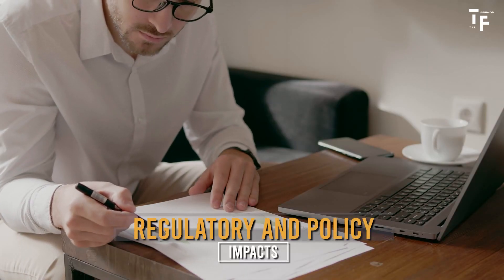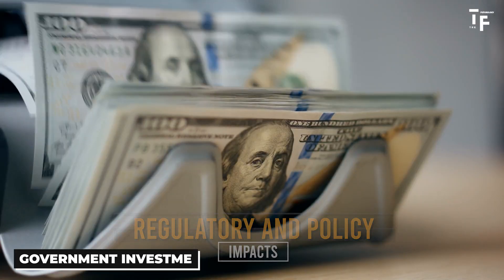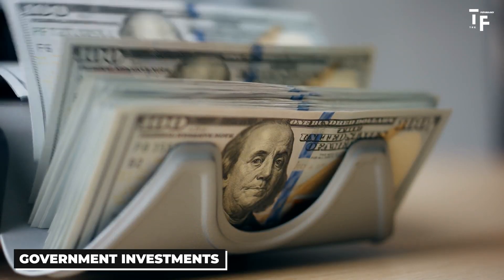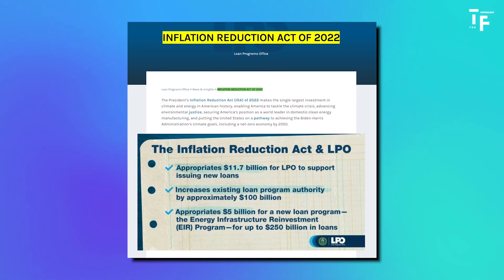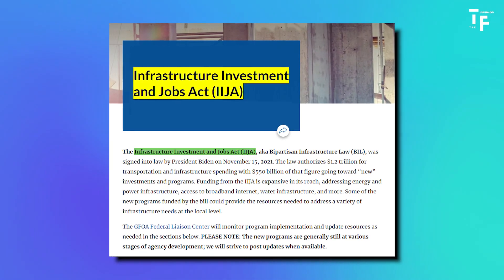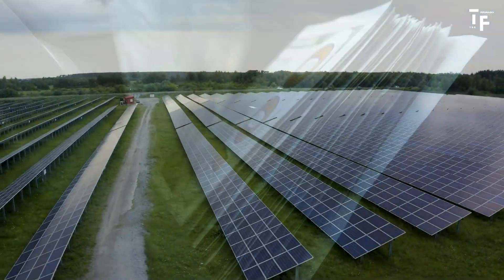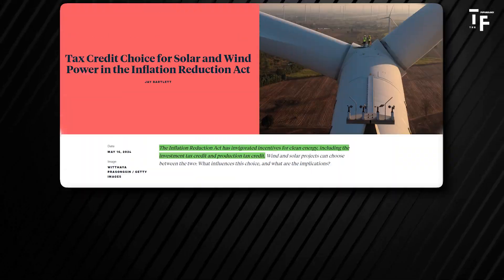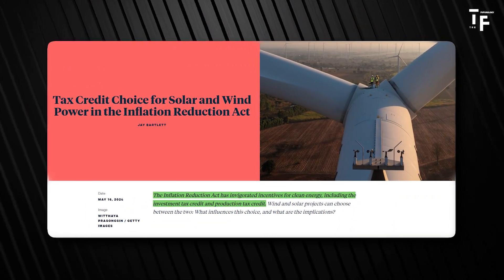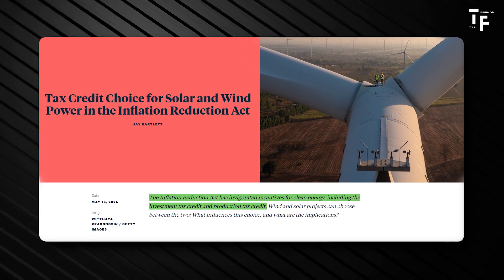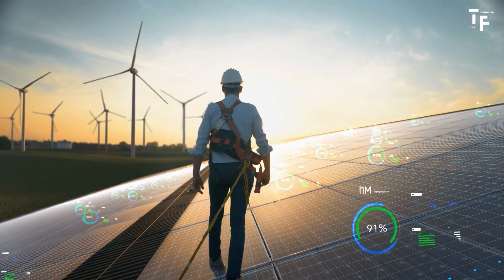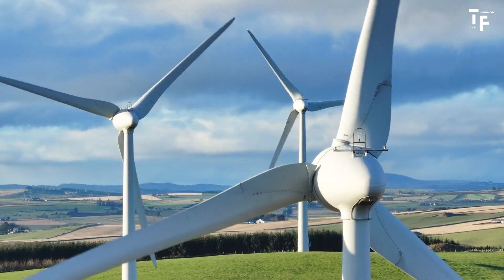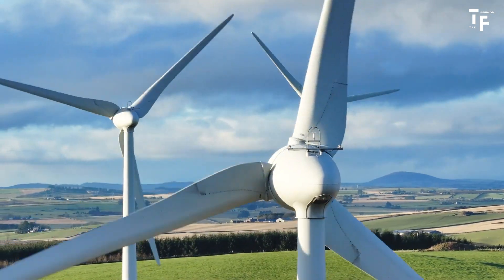Regulatory and policy impacts. Government investments. In the US, government spending through landmark initiatives like the Inflation Reduction Act and the Infrastructure Investment and Jobs Act drives unprecedented investment in renewable energy. The IRA, for example, has unlocked billions in tax credits and grants, particularly targeting solar, wind, energy storage and green hydrogen projects.